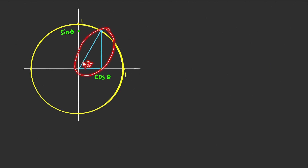then this adjacent side of the right triangle will be cosine theta, and the opposite side is equal to sine theta.